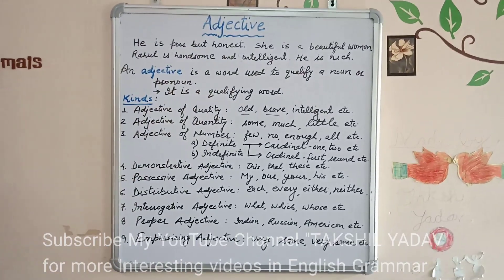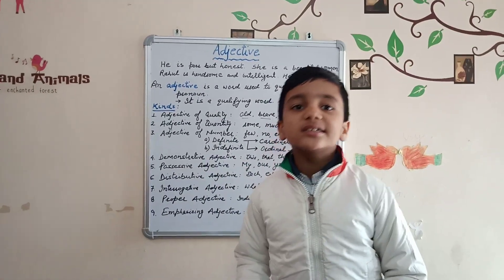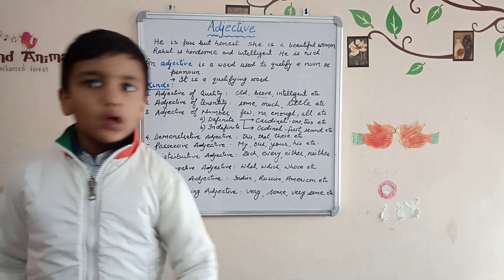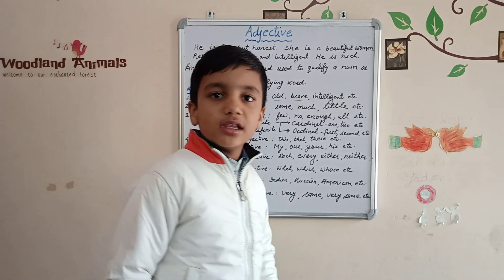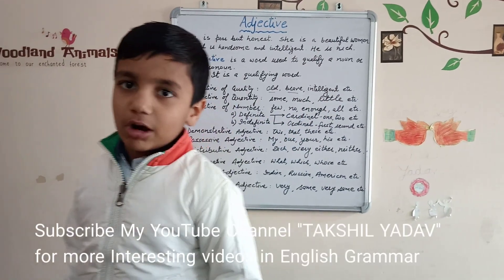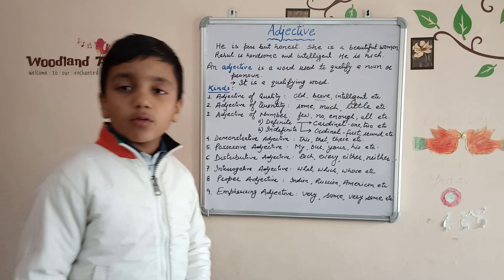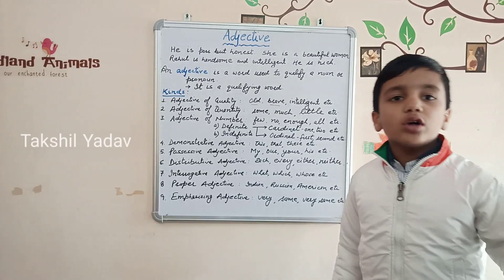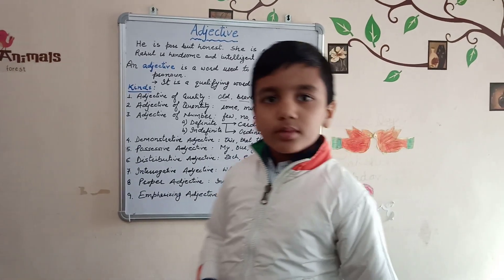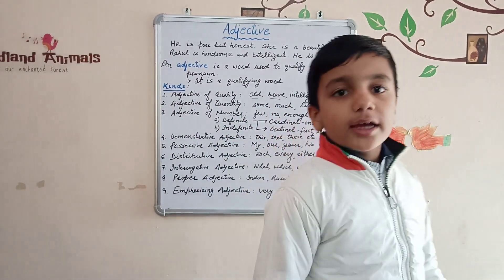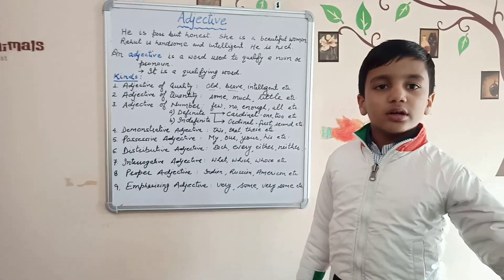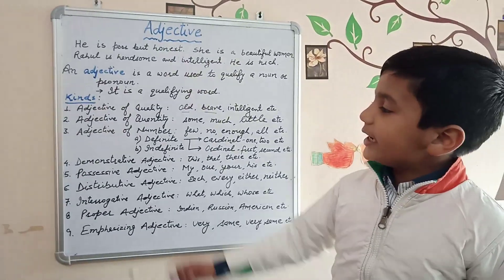Now, adjective of quantity. An adjective of quantity is an adjective that tells us how much a noun or a pronoun is. For example: some, much, little, a little, all, a lot of, sufficient, etc. For example, there was a little milk in the jar. Here 'little' tells us the quantity of the milk in the jar — it tells us the quantity. That is why it is an adjective of quantity.